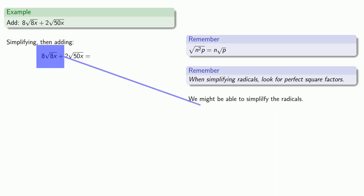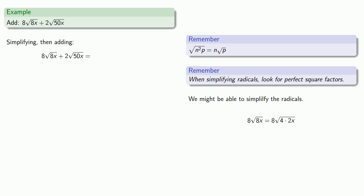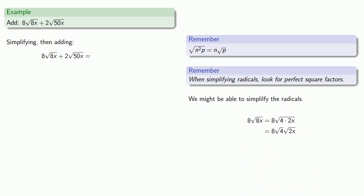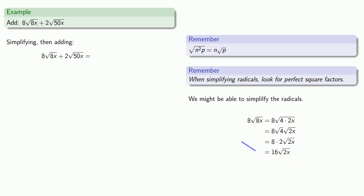Let's take a look at that first expression, 8 square root of 8x. We'll look at the radicand and look for a perfect square factor. We know that 8x is 4 times 2x. Since we have a square root of a product, we can rewrite it as the product of the square roots: square root of 4 times square root of 2x. The square root of 4 is 2, and we know how to multiply 8 times 2, so when we simplify, we get 16 square root of 2x.